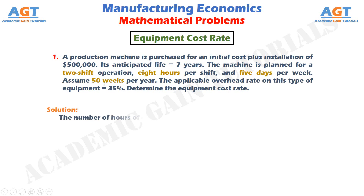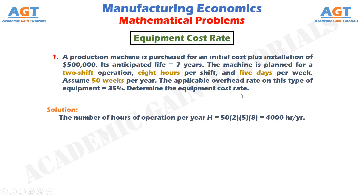The number of hours of operation per year, H, equals 50 weeks × 2 shifts per day × 5 days per week × 8 hours per shift, which equals 4,000 hours of operation per year.